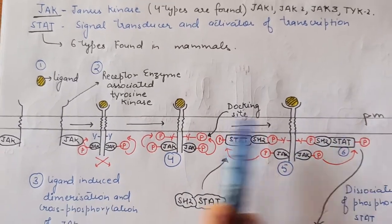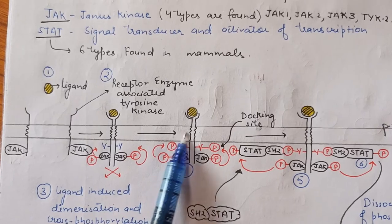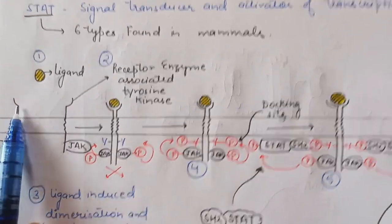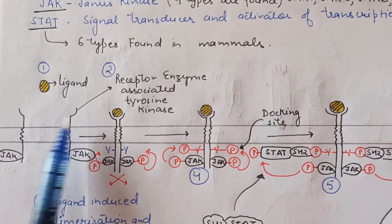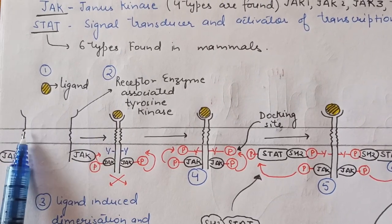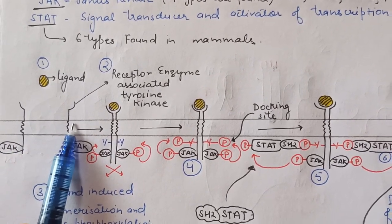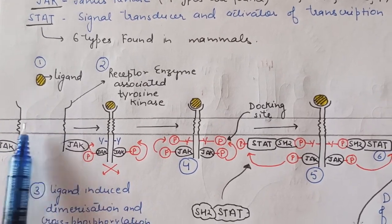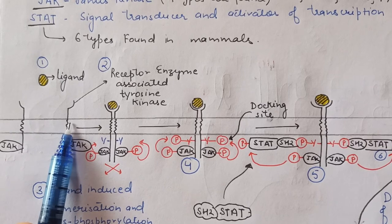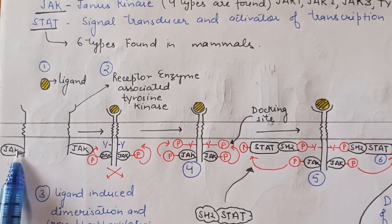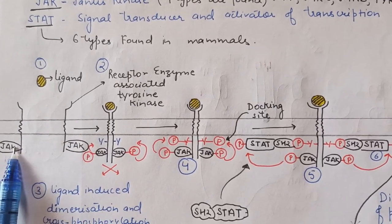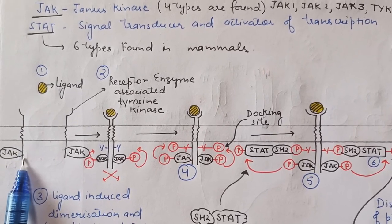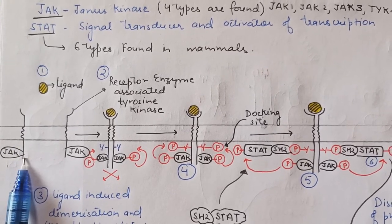The ligand binding occurs at the plasma membrane. In the first step, we can see these are two cytokine receptors present in the plasma membrane at a distance apart. At the C-terminal, JAK is associated with the receptor because this C-terminal cannot work as a catalytic unit on its own.